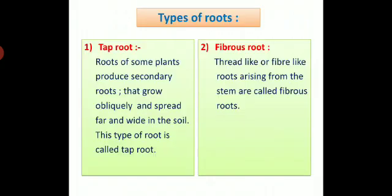Types of Roots. There are two types of roots: taproot and fibrous root. Taproot: roots of some plants produce secondary roots that grow obliquely and spread far and wide in the soil. This type of root is called taproot.